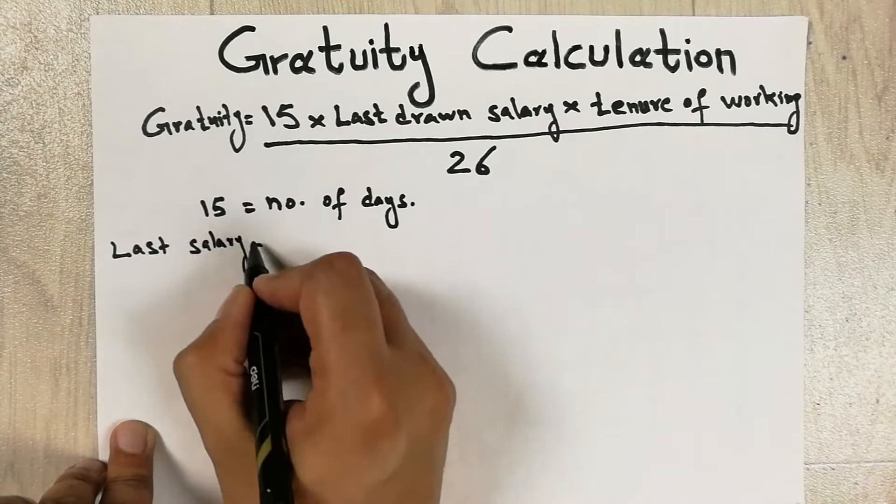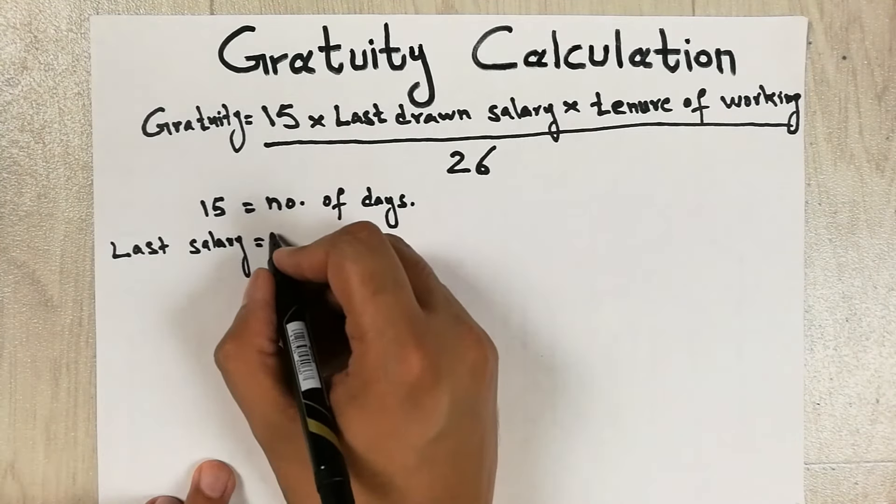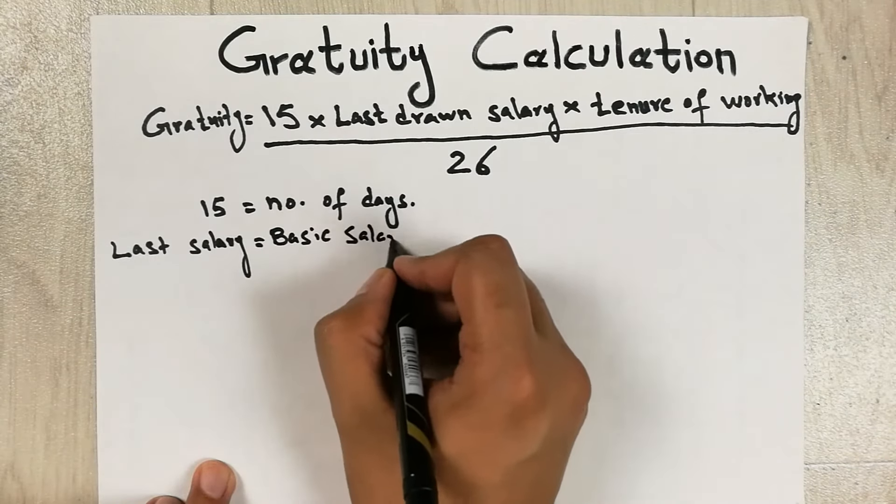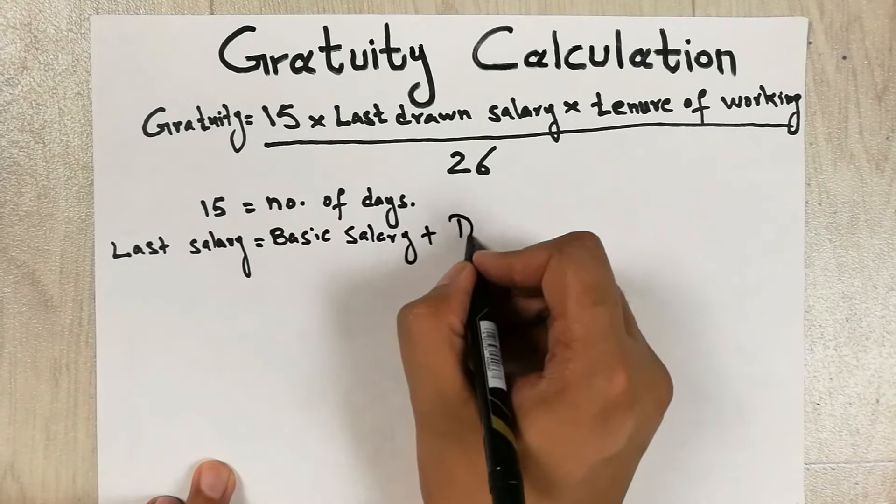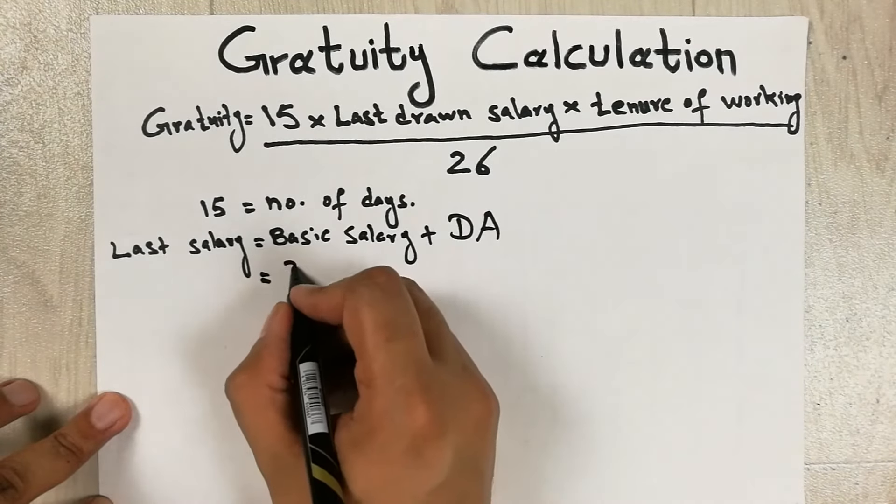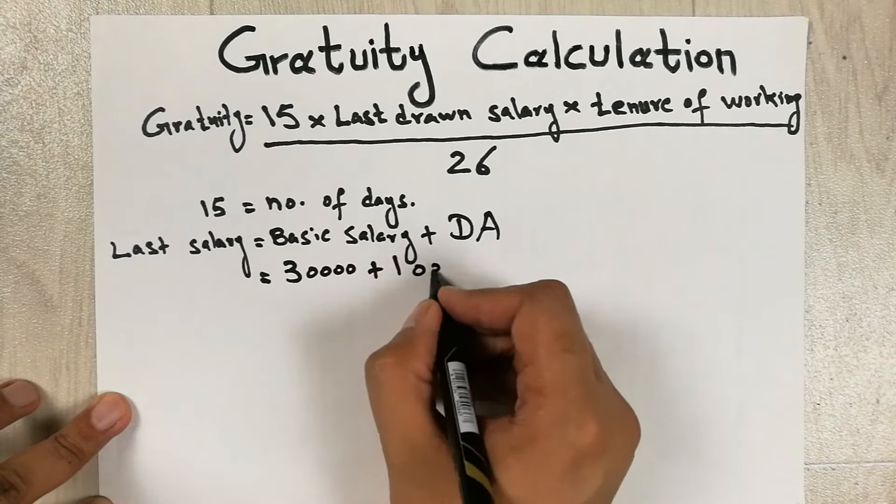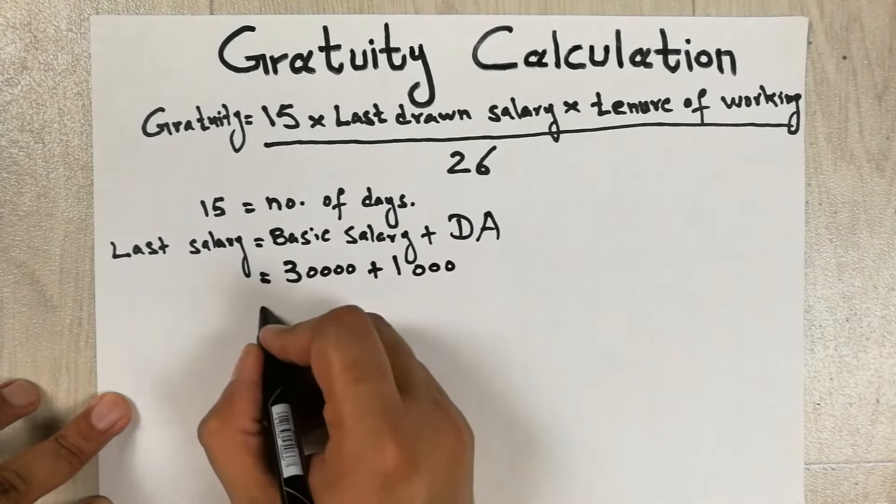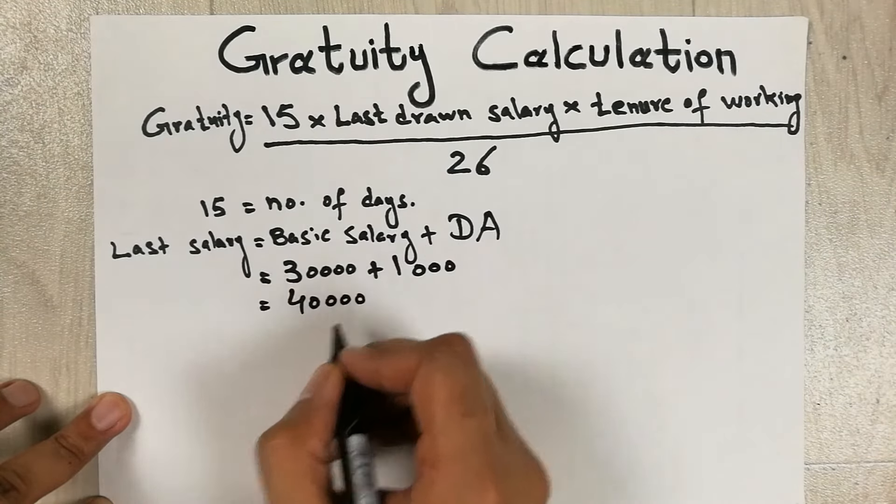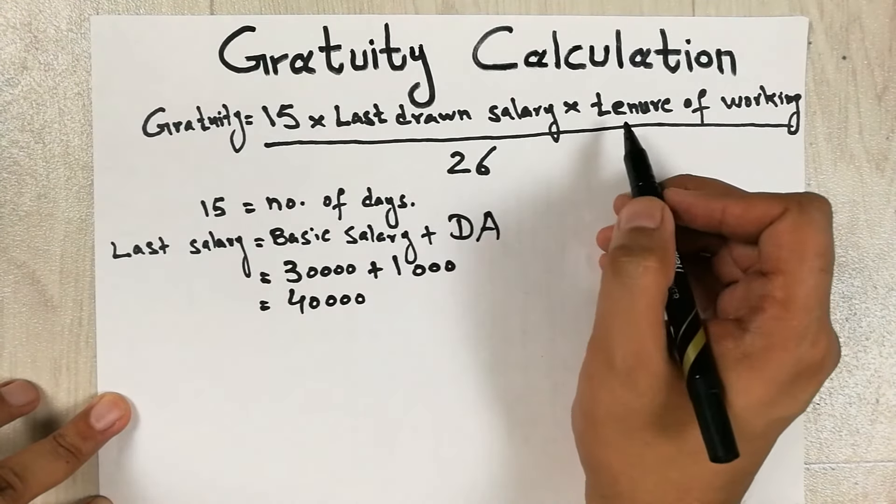This is equal to basic salary plus DA. So guys, for example, your basic salary is 30,000 and your DA is 10,000, so total will be 40,000. So guys, 40,000 is your last drawn salary.